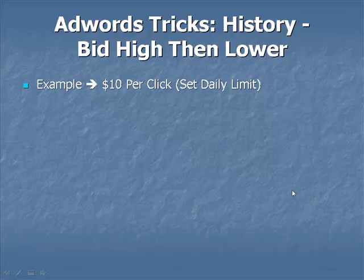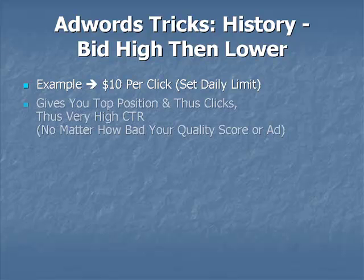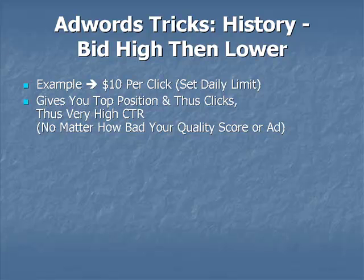We are going to place a high bid on our keywords — remember everything is at the keyword level. Don't forget to set a daily budget. You don't have to go as extreme as ten dollars per click. Let's say the keyword you're going after is running about a dollar per click — you would want to set it high, say two or three dollars. Make sure you have that daily budget and limit so your campaign doesn't take off and cost you a lot of money unnecessarily. Monitor this campaign frequently at the beginning.